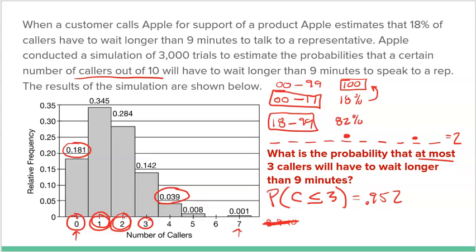We add 0.142 plus 0.284 plus 0.345 plus 0.181 and get 0.952. So there's a 95.2% chance that three or fewer out of 10 will have to wait longer than nine minutes. Obviously we would prefer nobody wait that long, but inevitably it is going to happen to some people.